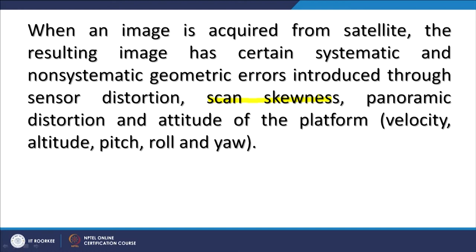When images are acquired from drones — which are moving platforms that may not be very stable — they may introduce a lot of geometric errors. These could be due to scan skewness, which is more prevalent in satellite images; panoramic distortions if the drone or satellite is at a very high altitude; and attitude of the platform. In the case of drones, changes in velocity, changes in altitude during image acquisition, and pitch, roll, and yaw are all relevant.